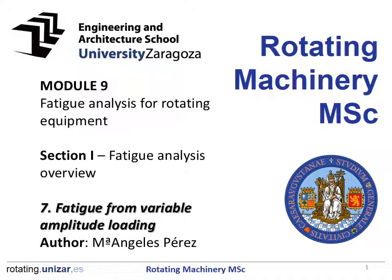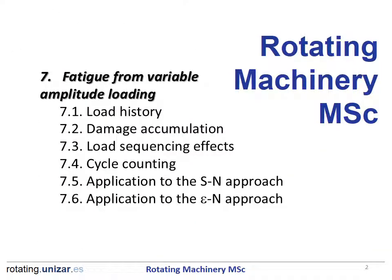This is chapter 7 of section 1: Fatigue from variable amplitude loading. In this chapter, the main characteristics of loading histories are going to be presented, along with the most common damage rules to predict damage accumulation, an overview of load sequences and different cycle counting methods, and finally the application of all these to the stress-life and strain-life approaches.